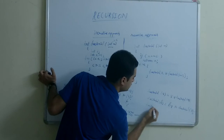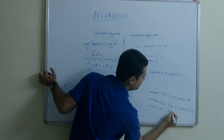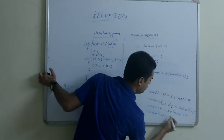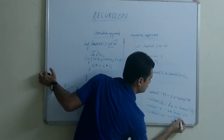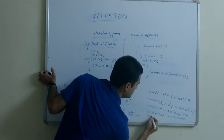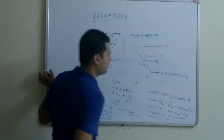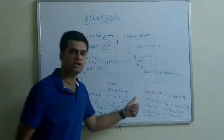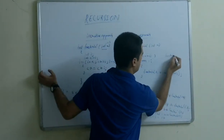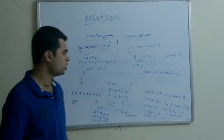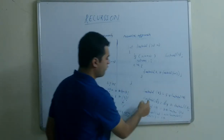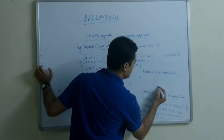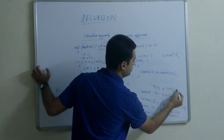Similarly, factorial of 3 is equal to 3 into factorial of 2, and factorial of 2 is equal to 2 into factorial of 1, which is 1 into 2. To calculate factorial of 0, I will replace my return x with return 1. Factorial of 0 is always known to our function — it will return 1. So finally what happens is 5 into factorial of 4, factorial of 4 is 4 into factorial of 3, and so on, giving us factorial 5 equal to 5 × 4 × 3 × 2 × 1 = 120.